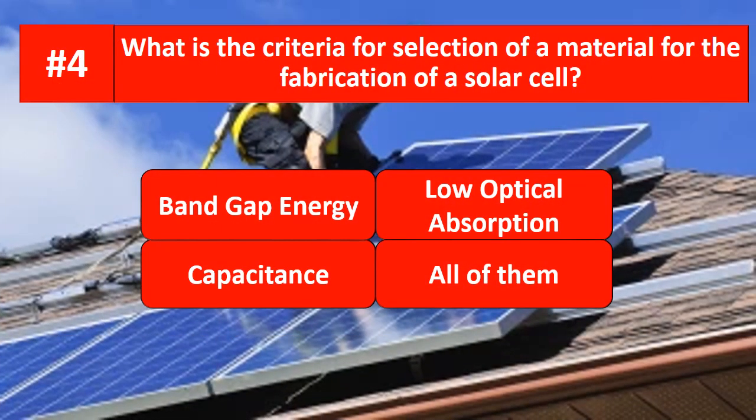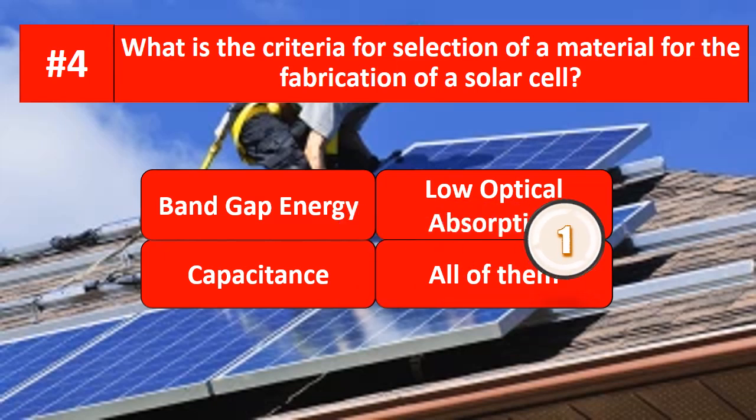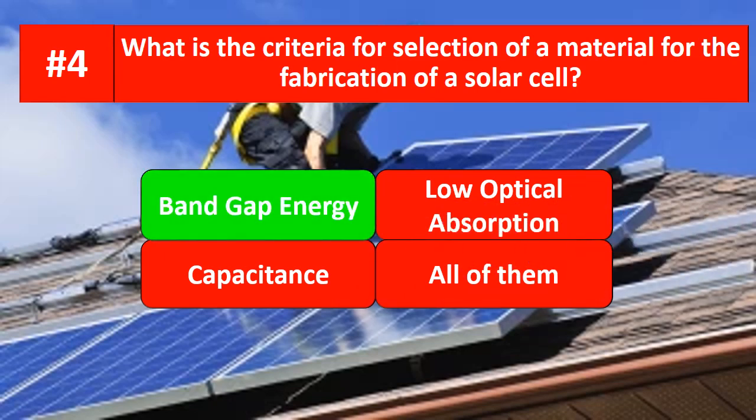What is the criteria for selection of the material for the fabrication of a solar cell? The options are band gap energy, low optical absorption, or all of them. The correct answer is band gap energy.